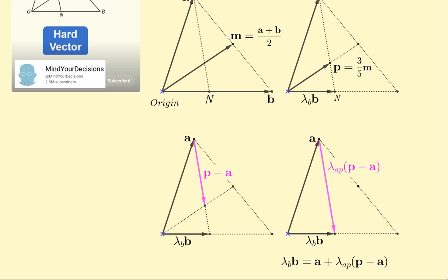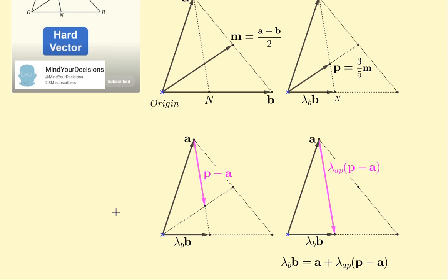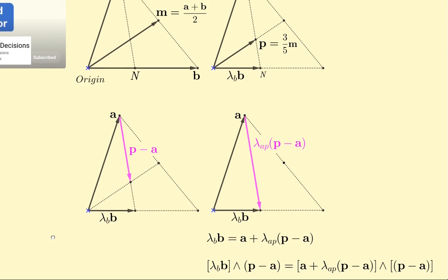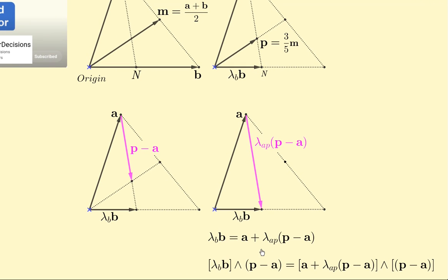How do we solve that to find lambda_B? Well, from previous work, and again the video that I'll link in the upper right-hand corner, what we want to do is find lambda_B, so we want to eliminate this term, and the way that we do that is to take the outer product or wedge product of both sides with P minus A.